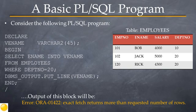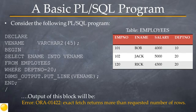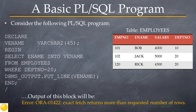Consider the PL/SQL block written to display the names of the employees in department 20. The program reads: DECLARE vename VARCHAR2(45); BEGIN SELECT ename INTO vename FROM employees WHERE DEPTNO = 20; DBMS_OUTPUT.PUT_LINE(vename); END. The select statement should retrieve two rows based on the condition department number equal to 20. But when this program is executed it returns the error: exact fetch returns more than requested number of rows. This is because the query returns more than one row and you will have to rewrite this program using an explicit cursor.